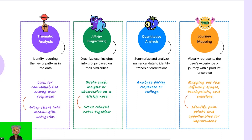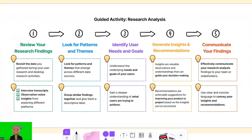In the HKTV Mall case study, they used affinity mapping, which helped them organize and make sense of their research findings by grouping related insights together. It's a simple and effective way to identify patterns and themes. These are just a few examples of research analysis techniques. The key is to choose the method that best suits your data and research objectives. The ultimate goal is to extract meaningful insights from the data we've collected.